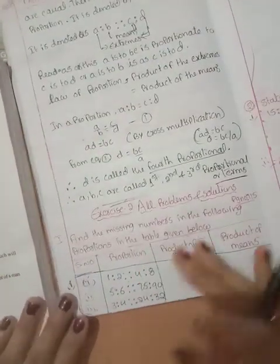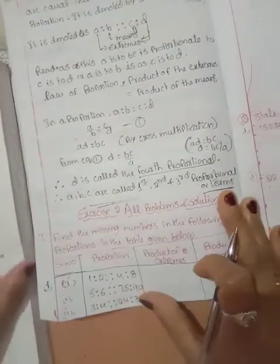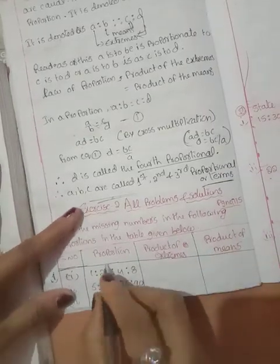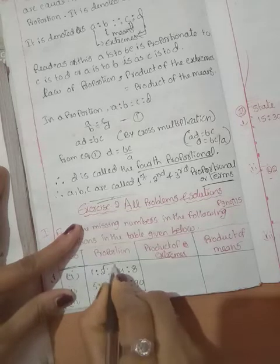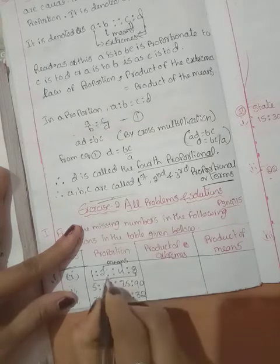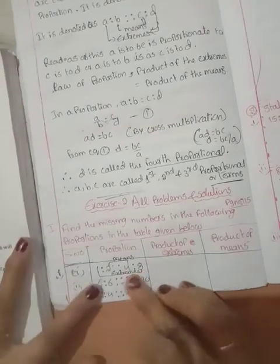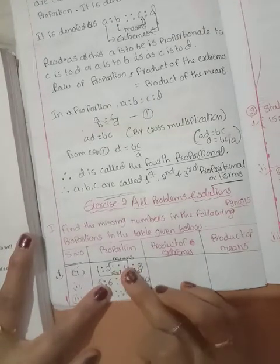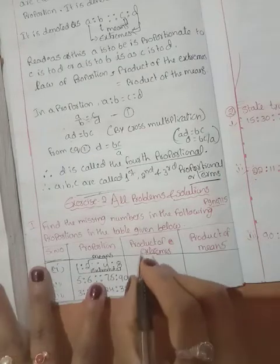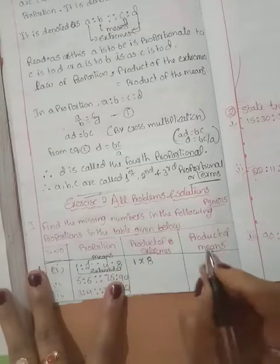Today we will solve in your notes only. First of all, your first problem. Proportion and product of the extremes and product of the means — you can find out what are the products here. The first term and fourth term are the extremes only, and the second and third are the means only.